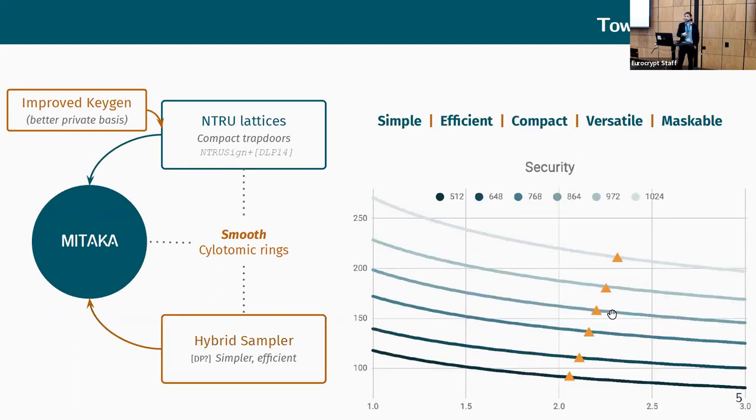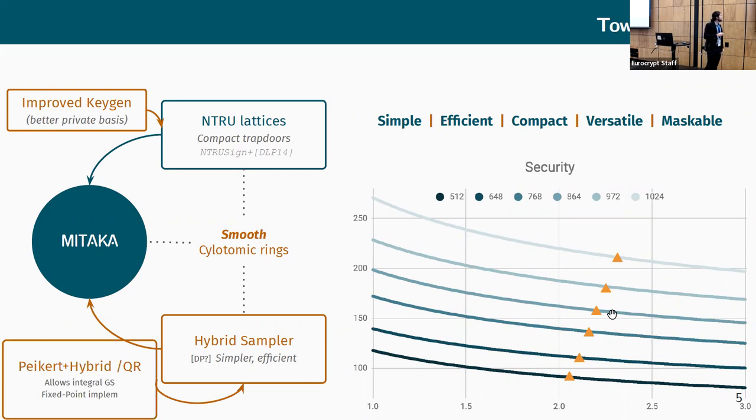All in all, we get a signature which is simple to implement thanks to this hybrid sampler, which is efficient—more efficient than Falcon—which is compact, almost as compact as the original, versatile in terms of parameters, and which is maskable. I will come to that at the end of the talk. Moreover, we can actually tweak this hybrid sampler and it allows us to have an implementation in fixed-point arithmetic which can be interesting for constrained devices. For the rest of this talk I will focus on describing what is this hybrid sampler and how it's important for the security, and on what we did for the improved keygen.